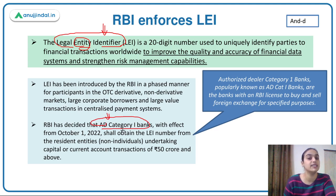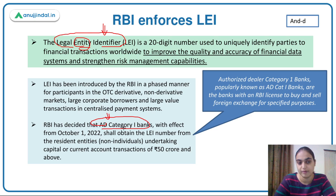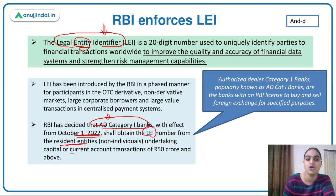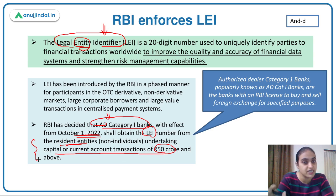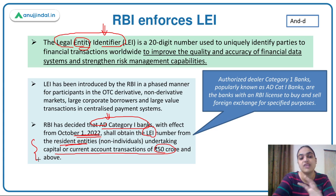Authorized Dealer Category 1 banks are banks that have been given a license by RBI to deal in foreign exchange — they can buy and sell foreign exchange. RBI has notified that from 1st October 2022 onwards, these banks will obtain the LEI number from resident entities which undertake current and capital account transactions of 50 crore or above. This applies to entities, not individuals.